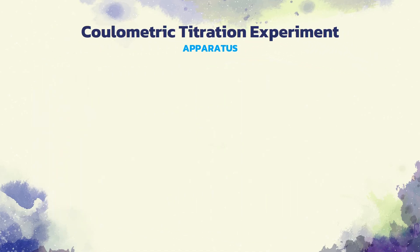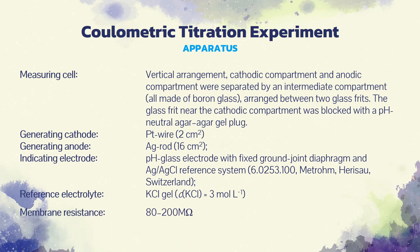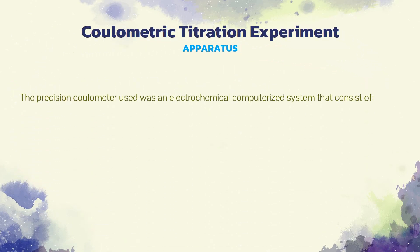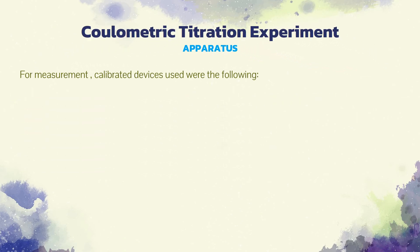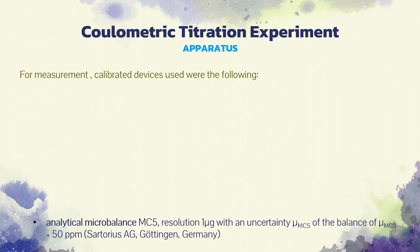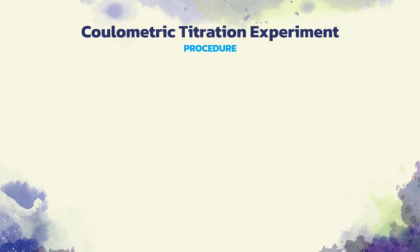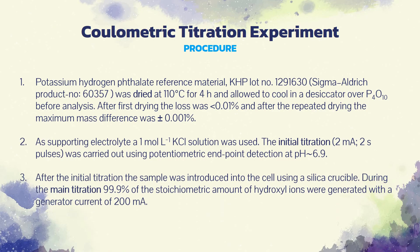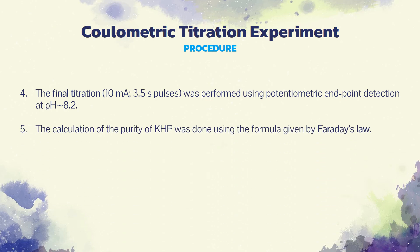The precision coulometry used was an electrochemical computerized system that consists of a constant current source, an indication unit, a valve unit, and a piston burette. For the measurements, four calibrated devices were used: an analytical micro balance, a timer, a multimeter, and a resistor. The experimental procedure involves drying of the sample, performing the initial, main, and final titrations, and calculation of purity and measurement uncertainty.